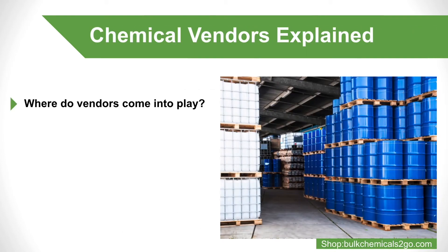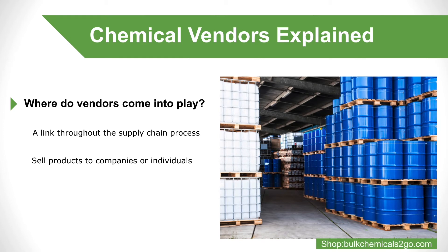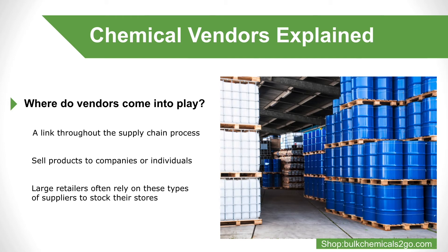Chemical Vendors Explained. So, where do vendors come into play? This group is a link throughout the supply chain process. Vendors are the people who sell products to companies or individuals. After the manufacturing of the product, this group will find the companies who are looking to sell the manufactured product to other people, and the vendors will sell it to said companies. For example, large retailers often rely on these types of suppliers to stock their stores with products to sell to consumers. Vendors can also be the link between the raw materials and the suppliers, or the supplier and the manufacturer. Basically, chemical vendors are the people who sell goods to another company or individual.